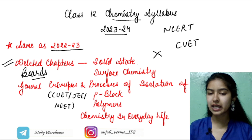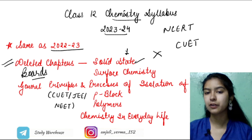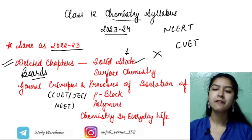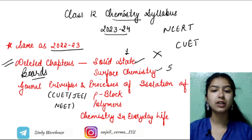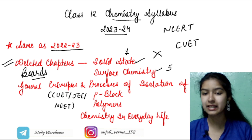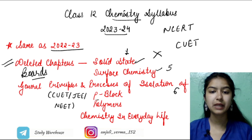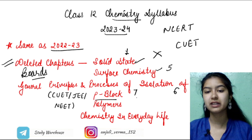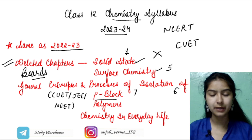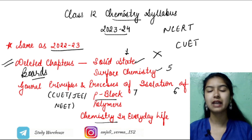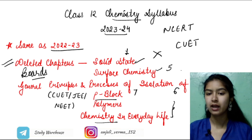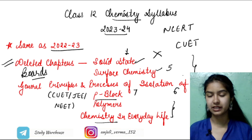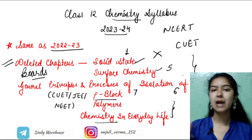The deleted chapters we need to prepare for competitive exams are: Solid State, which is Chapter 1; Surface Chemistry, which is Chapter 5; General Principles and Processes of Isolation of Elements, which is Chapter 6; P-Block Elements, which is Chapter 7; and Polymers and Chemistry in Everyday Life, which are the last chapters from the second book. These are all the deleted chapters.